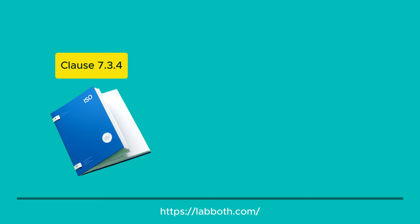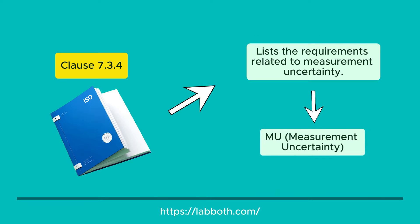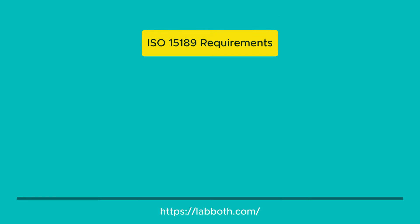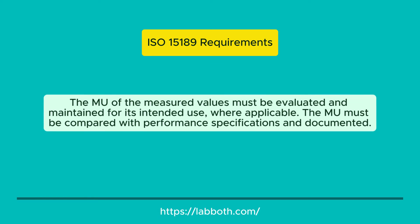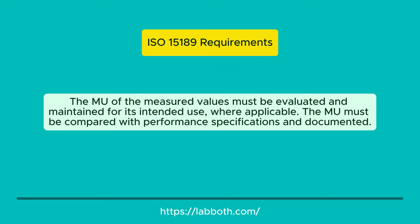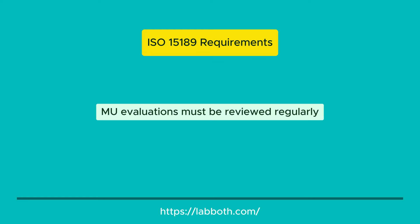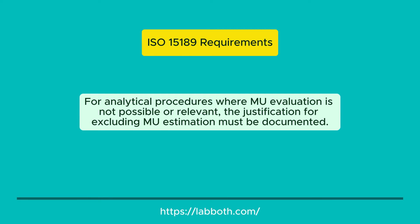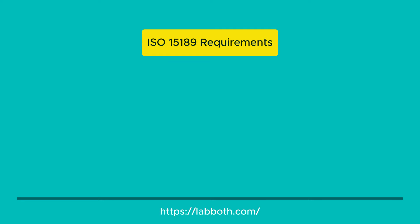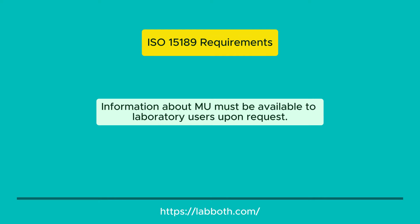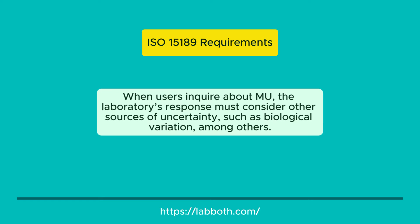ISO 15189 Standard Requirements for Uncertainty Management. Clause 7.3.4 of the standard lists the requirements related to measurement uncertainty, referred to as MU. The MU of measured values must be evaluated and maintained for its intended use, where applicable. MU must be compared with performance specifications and documented. MU evaluations must be reviewed regularly. For analytical procedures where MU evaluation is not possible or relevant, the justification for excluding MU estimation must be documented. Information about MU must be available to laboratory users upon request.